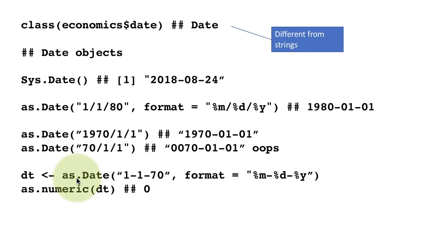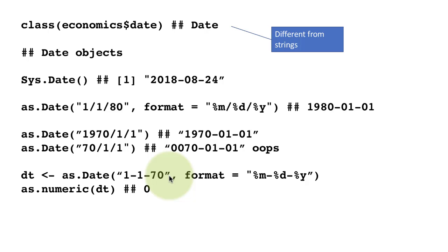We stored the result of January 1, 1970 in a variable called 'dt'. You can convert a date to a number — interestingly, when you do as.numeric(dt), you get the value 0. That's because R stores dates internally as the number of days from 1970. Therefore the date for January 1, 1970 is 0.